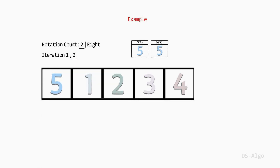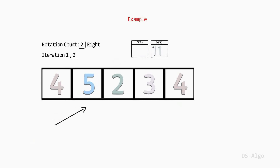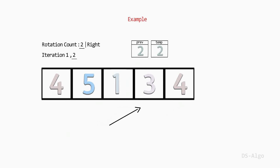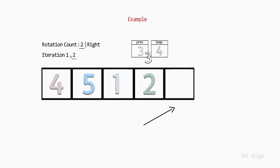Let's begin with the second rotation. Initialize the prev value with the last element of the array — that is 4. Now start iterating for rotation count 2. Store the current element in temp — that is 5. Update the current element with prev — that is 4. Then update prev with temp — that is 5. Move to the next element and repeat until the second rotation finishes. As we can see, the iteration of the second rotation has finished. Finally, after performing two iterations, the array is rotated by two positions towards the right direction.